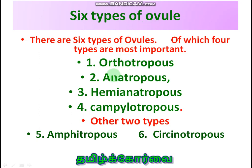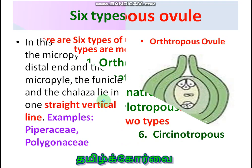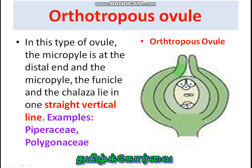Orthotropous ovule: the funiculus is at the base, followed by chalaza, followed by the micropyle — so micropyle, funiculus, and chalaza are present in a straight vertical line. The micropyle is present at the distal end of the ovule. Examples: Piperaceae and Polygonaceae family members.